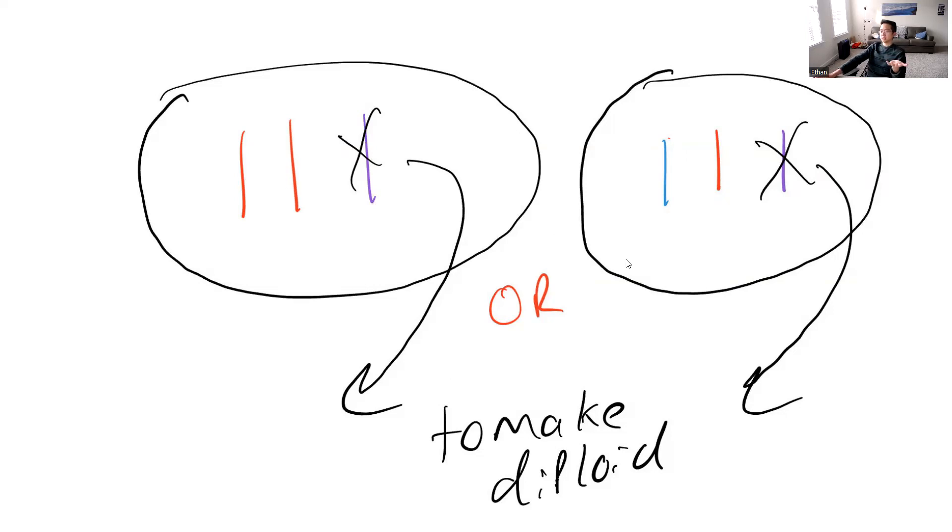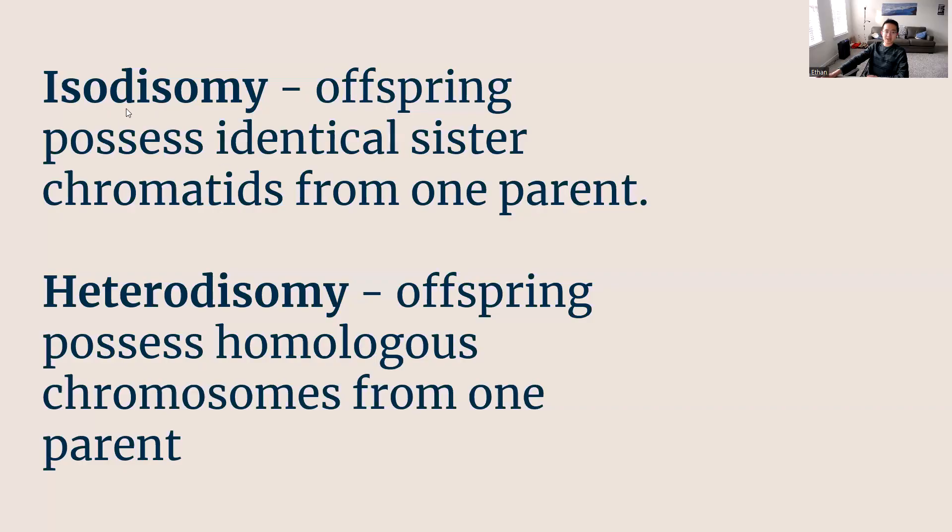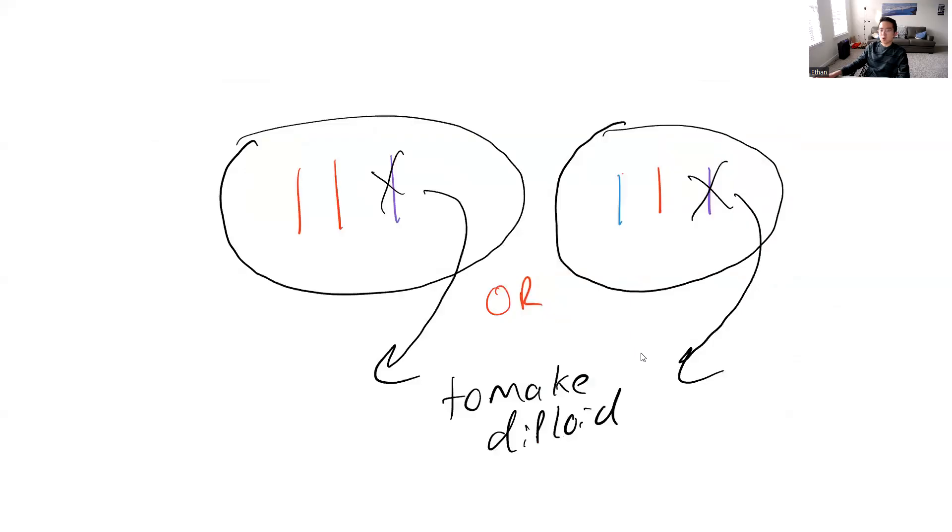However, I kept the colors here for a purpose in that uniparental disomies don't always involve the exact same chromosomes. You can either get the sister chromatids that are identical or you get the homologous chromosomes, which are not perfectly identical. And this nuance is encapsulated in these two terms I want to introduce, which are isodisomy and heterodisomy. The isodisomy is involved with the identical sister chromatids, two red. Heterodisomy is involved with the red and the blue, both homologous chromosomes. So going back to this picture, I want to do a little quiz. Which one is heterodisomy? Which one is isodisomy? Pause this video. I'm going to uncover it in three, two, one. Yep, that's isodisomy, identical sister chromatids, and heterodisomy, not identical sister chromatids, but instead homologous chromosomes.